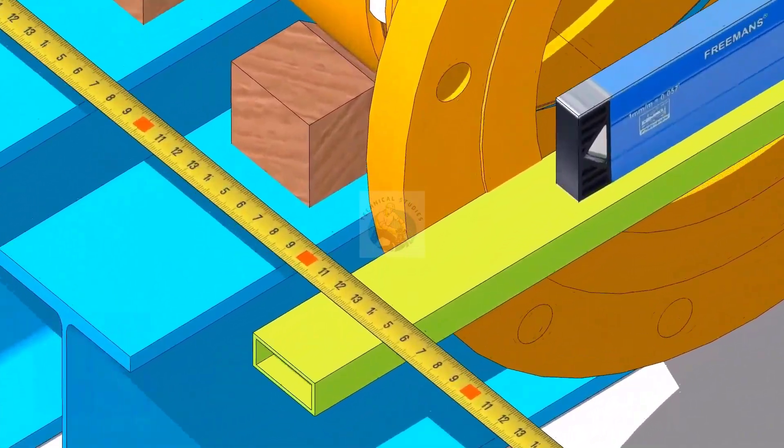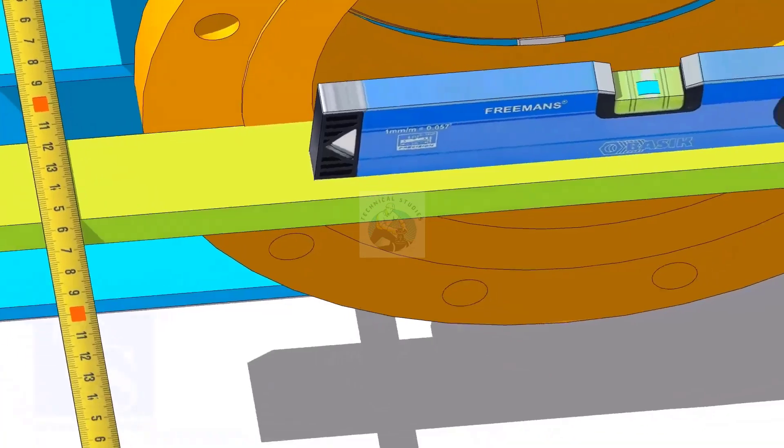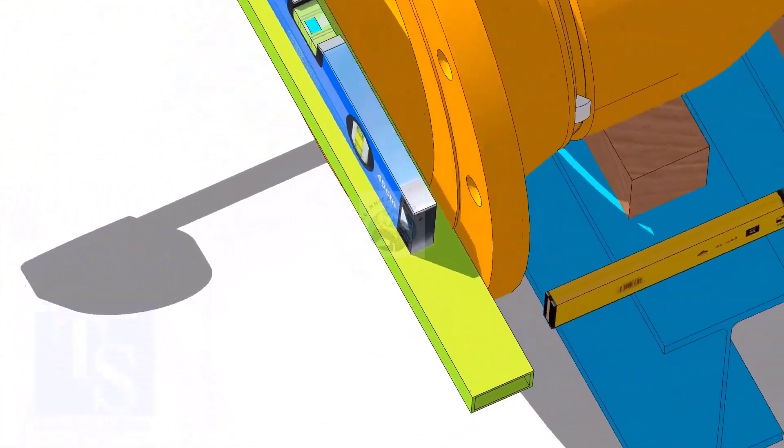Check the length of the spool on both sides. If the dimensions are equal or within acceptable limits, tack weld on both sides.